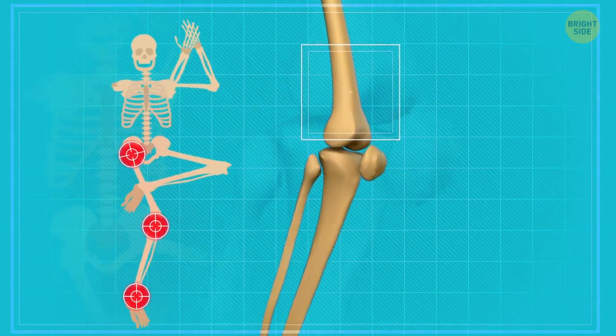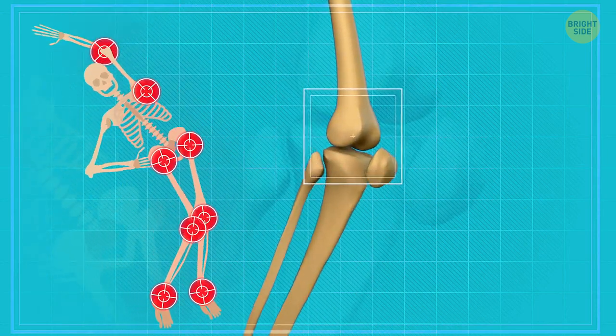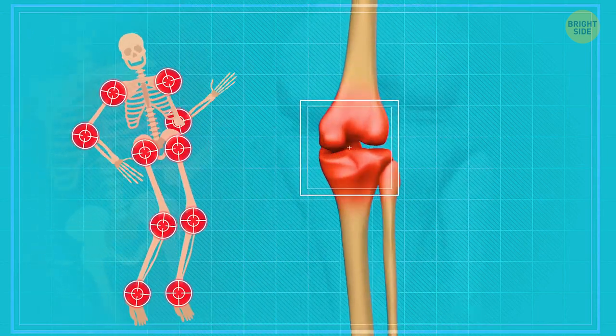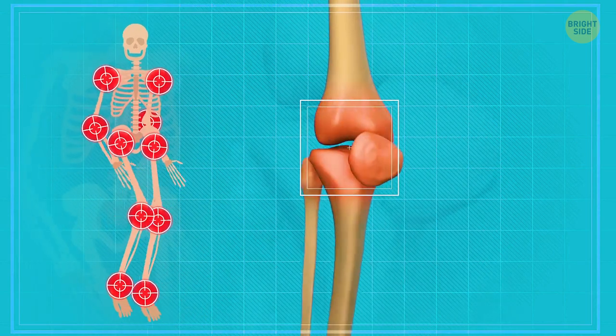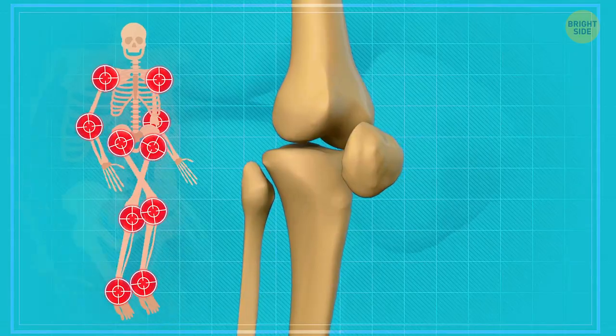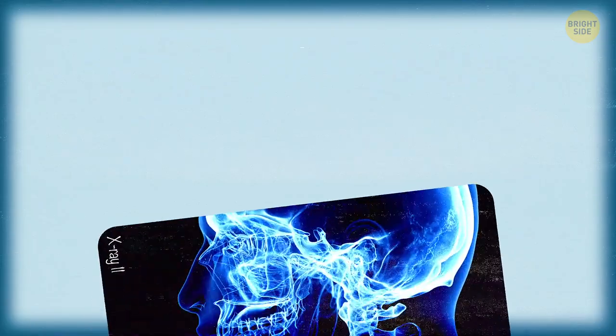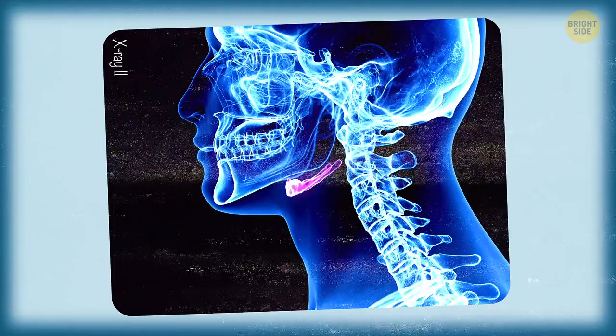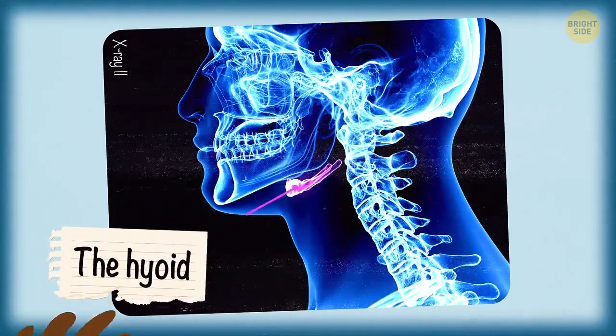Our body moves when our muscles contract across our joints, moving our bones. Simple and elegant. They're attached to your bones, and your bones make up your skeleton. There's only one bone in your entire body that has no joints. Out of more than 200, this special bone is the hyoid.